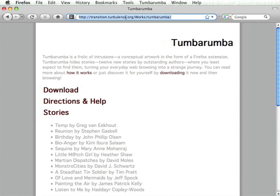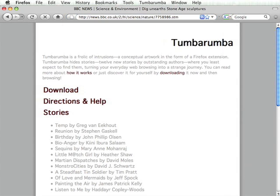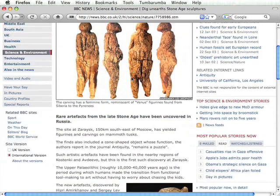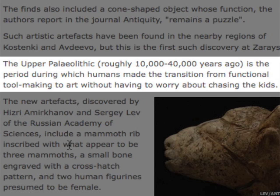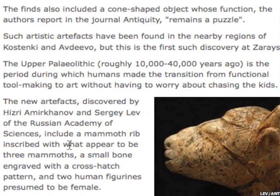I've found a couple of places where this is happening, at least on my computer — on another computer it happened in different places. The first is on the BBC News website. If I scroll down to the fourth paragraph, it says: 'The Upper Paleolithic, roughly 10,000 to 40,000 years ago, is the period during which humans made the transition from functional tool-making to art without having to worry about chasing the kids.' That doesn't sound quite right, so I'm going to roll my cursor over that phrase. Sure enough, the cursor changed to a pointer cursor — a clue that this is the effect of the Tumbarumba add-on. What's happening is the add-on is grafting half of a sentence from a short story to half of a sentence from the web page.